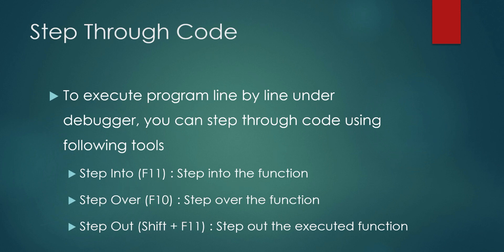Step Into means it will execute your program line by line, and if there is a method call present, it will show the execution of that method also. Step Over also executes your program line by line, but it does not execute your method call line by line. Your method does get executed, but you are not debugging through that function — so if it is not necessary to debug that function, you can skip it using Step Over.